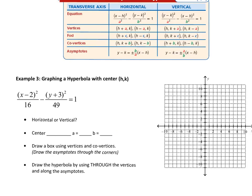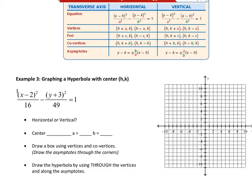We're going to graph this one, but this time we have to figure out where the center is first because it's not going to be at (0, 0). x is first, so this one is horizontal. The center is (h, k) — remember, h is always next to the x and k is always next to the y, and you take the opposite sign. It was negative 2, so our center is at positive 2. This was positive 3, so we'll put negative 3. Plot that: 2 over and 3 down.